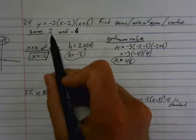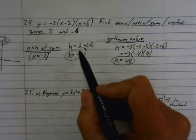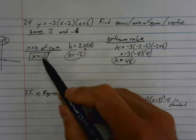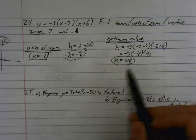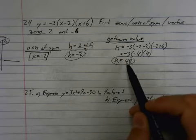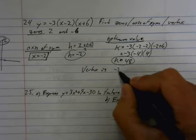So the k value is equal to forty-eight. So, zeros: take your two zeros, which is what makes the bracket go to zero. Find your axis of symmetry: add the two zeros, divide by two. Plug the axis of symmetry in for your x's and solve for the y value, which is now your optimum value. And then vertex is negative two, forty-eight.